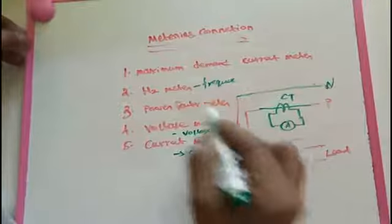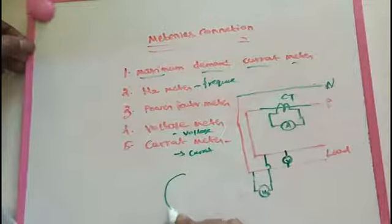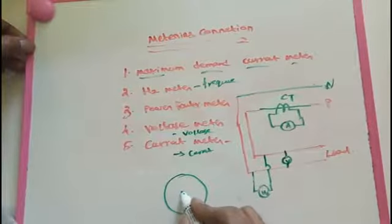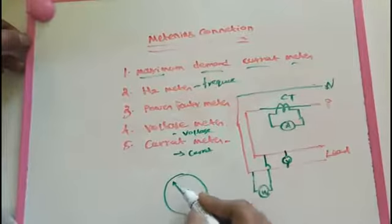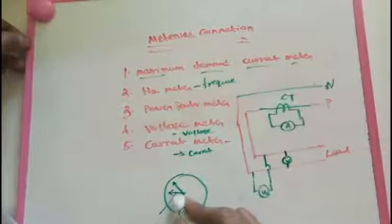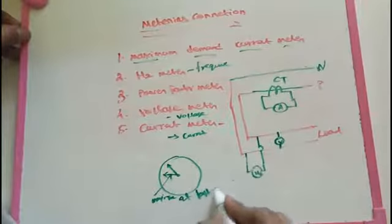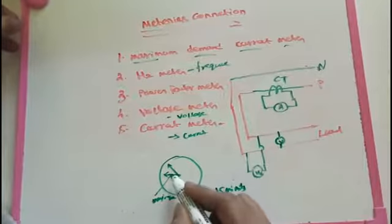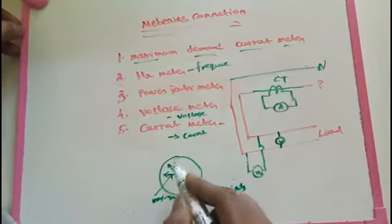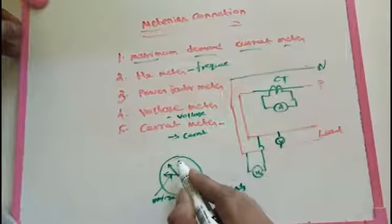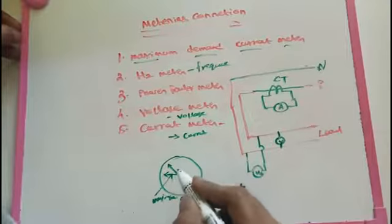After those three meters, we see the maximum demand indication current meter. It has two needles. One needle indicates the current flowing at that instant, and the other needle indicates the maximum demand reached in the last 15 minutes. For example, if 400 amperes flowed 10 minutes ago, that is recorded and the needle stays at that position. That is the purpose of the maximum demand indication meter.